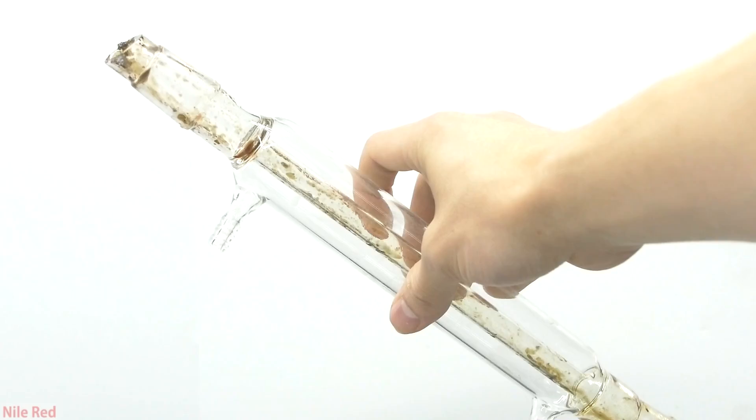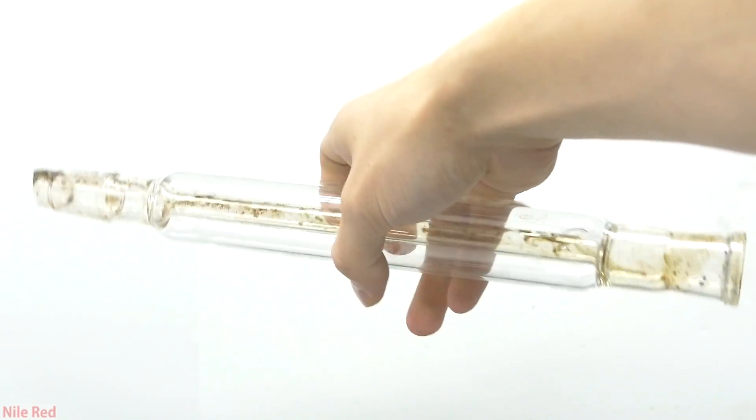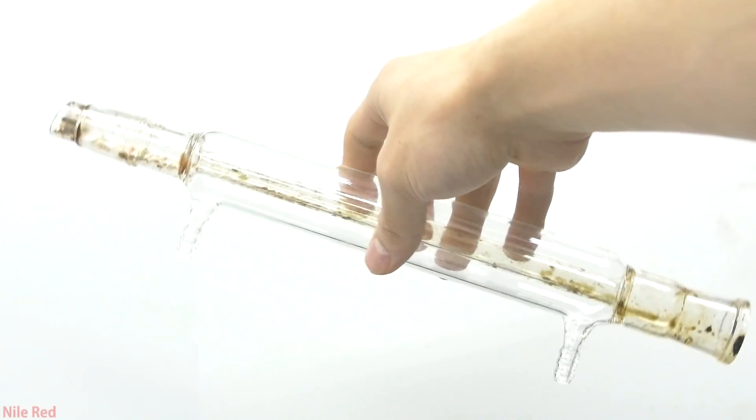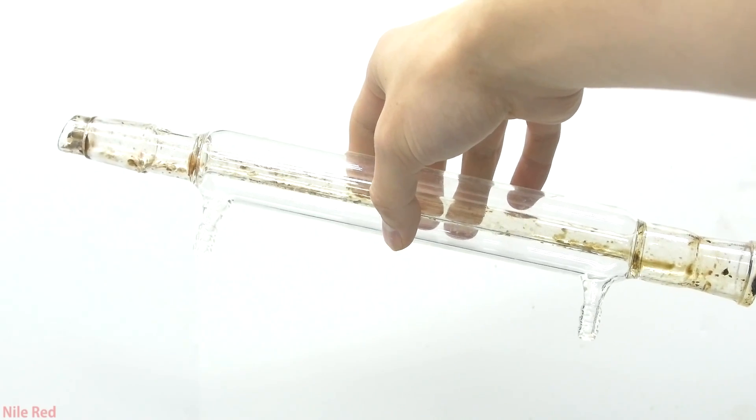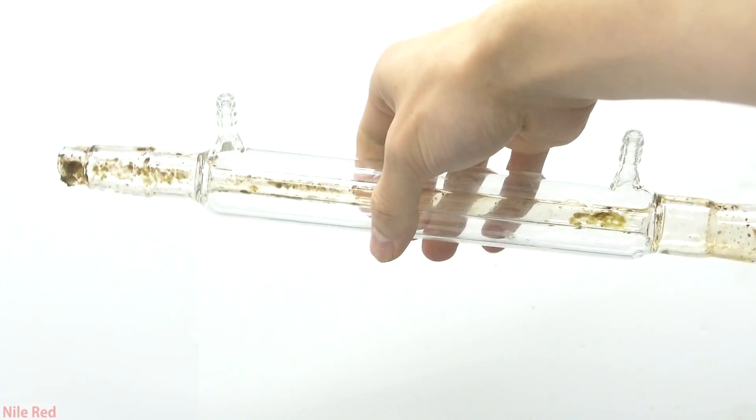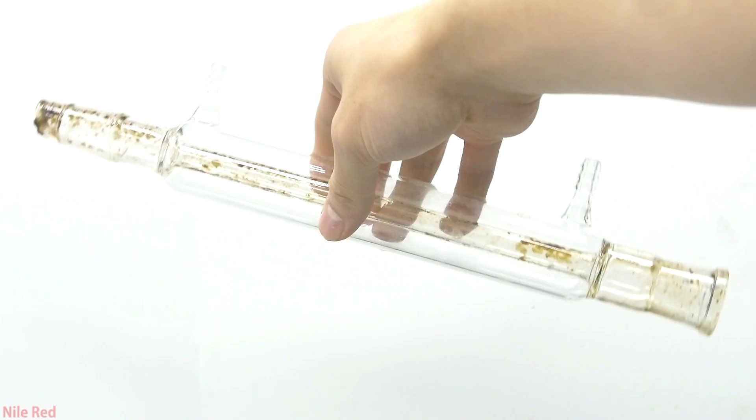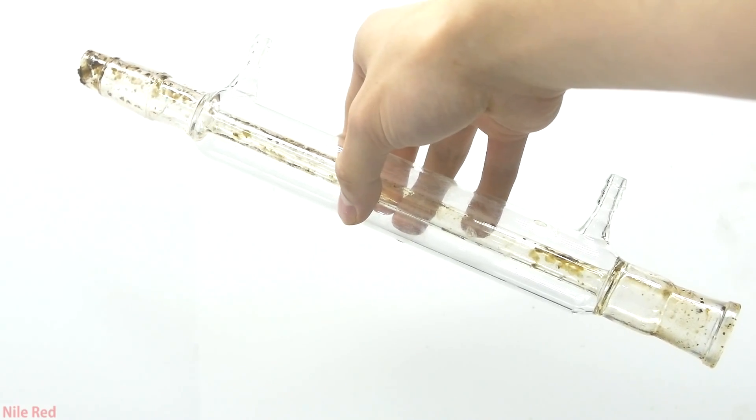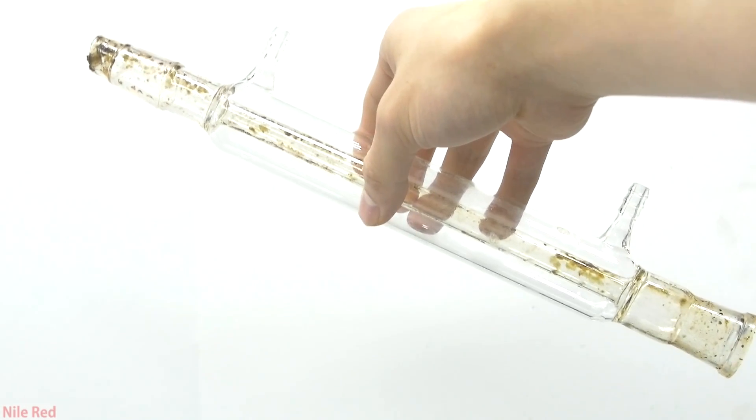For pretty much all of the glassware, I threw it into a base bath to destroy any of the acrolein that might remain. After sitting in the base bath for a little while, I took it out, and I had to manually scrape off all of the acrolein polymer. It doesn't really stick too well to glass though, so it wasn't very hard to do.